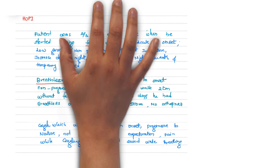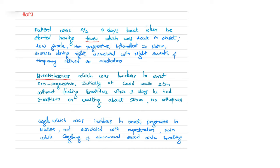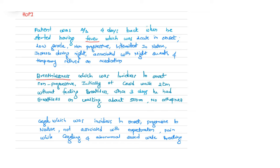History of present illness: patient was apparently alright four days back when he started having fever — acute in onset, low grade, non-progressive, intermittent in nature, increased during night, associated with night sweats, with temporary relief on medication. Breathlessness was insidious in onset, non-progressive; initially patient could walk two kilometers, but since three days he had breathlessness on walking 500 meters, no orthopnea, MMRC grade two. Cough was insidious in onset, progressive, not associated with expectoration, with pain while coughing and abnormal sound while breathing.